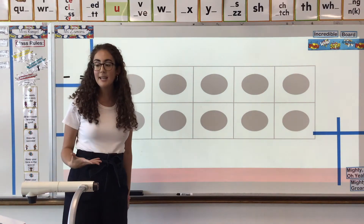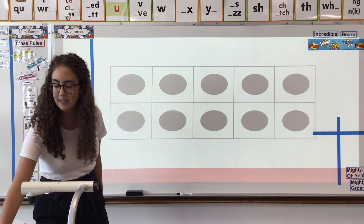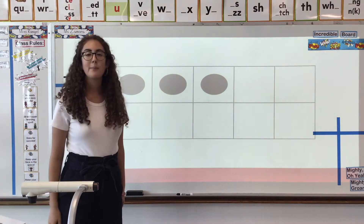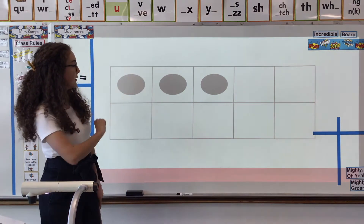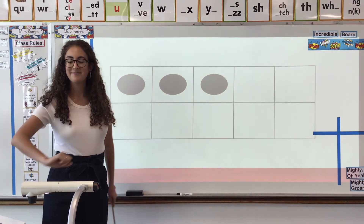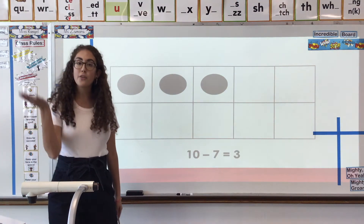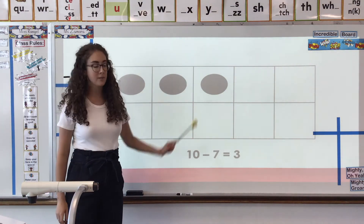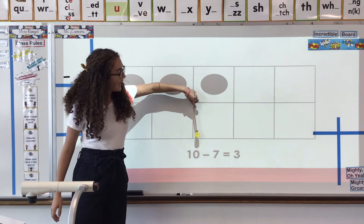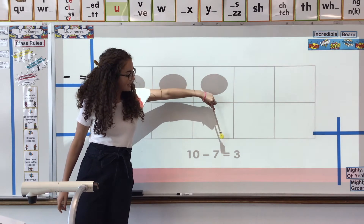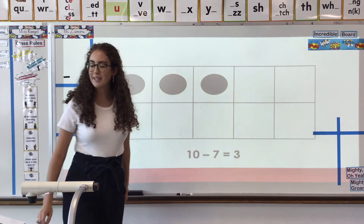10 minus 7. Minus 7 equals 3. There are 3 left. Say it with me: 10 minus 7 equals 3. Good job.